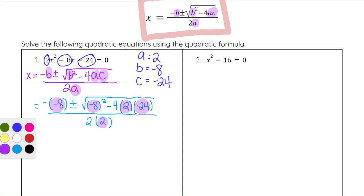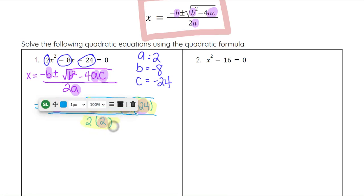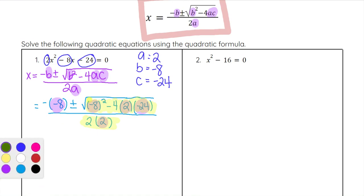Your first step is to simplify the discriminant, which is the part underneath the square root. You can also simplify the denominator, but we don't want to divide yet. In this case, we have a double negative, so we change negative negative 8 into positive 8. Negative 8 squared is 64, positive 64.